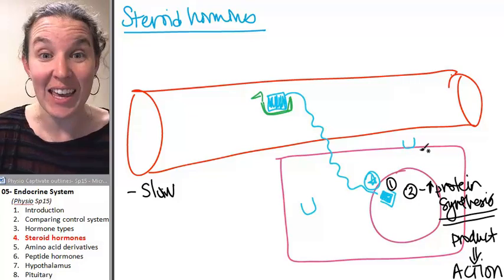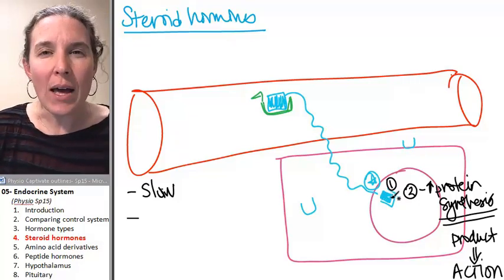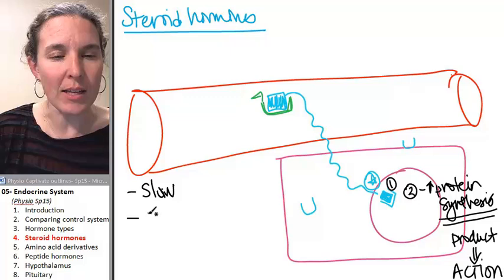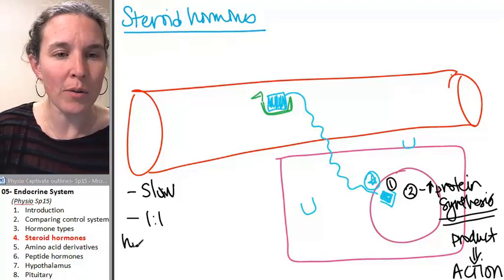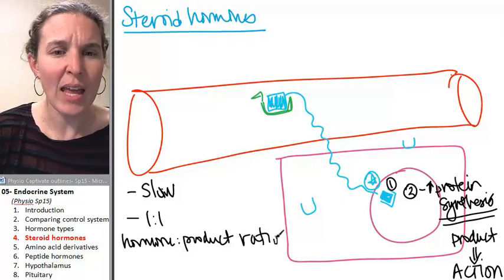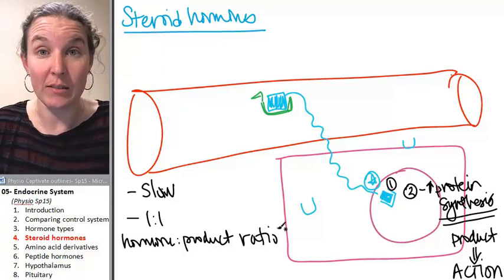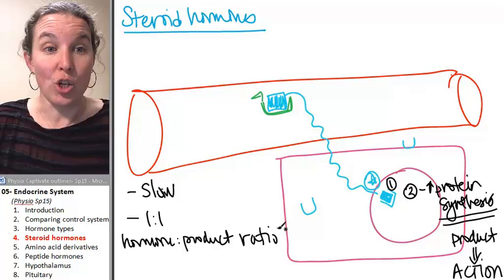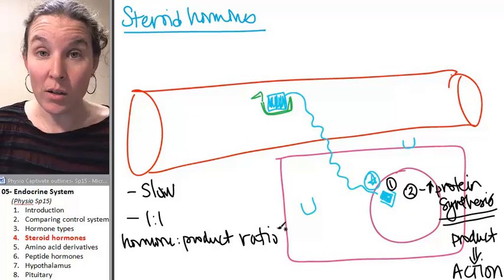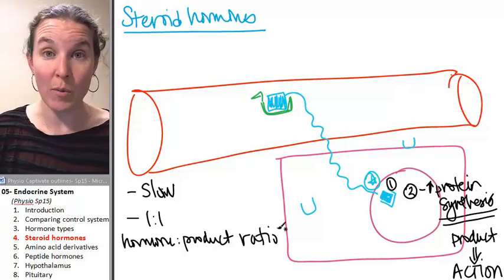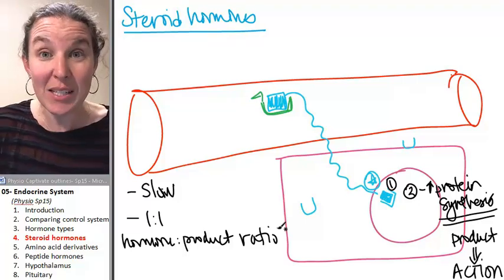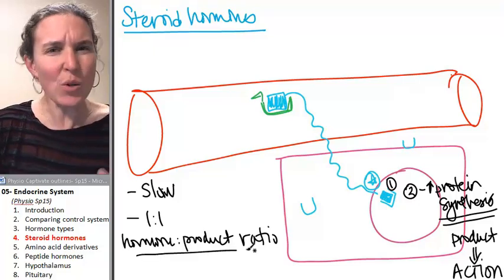And here's the other thing that is true: there's a one-to-one hormone-to-product ratio. And that just means if you want one protein produced to stimulate an action, you have to send in one hormone, and then it'll happen. If you want more protein, then you just have to send in more hormones. The only way to amplify the effect is to increase the amount of hormone that you've produced. So it's slow, and you can't amplify it.